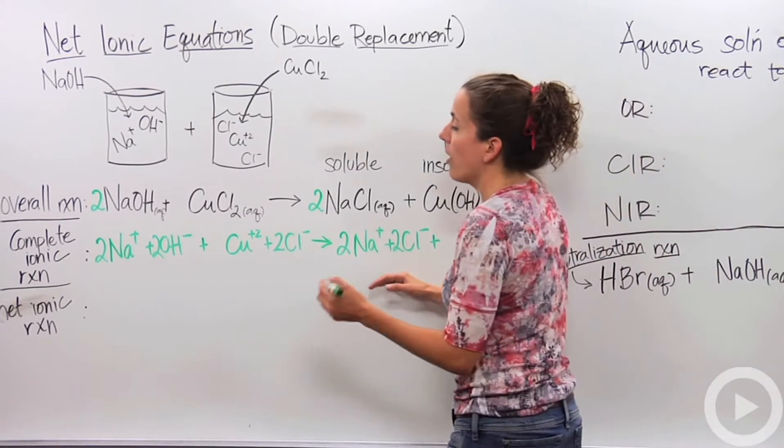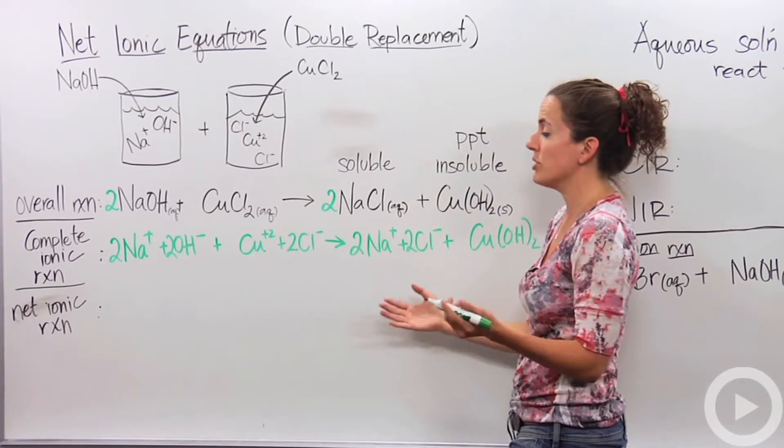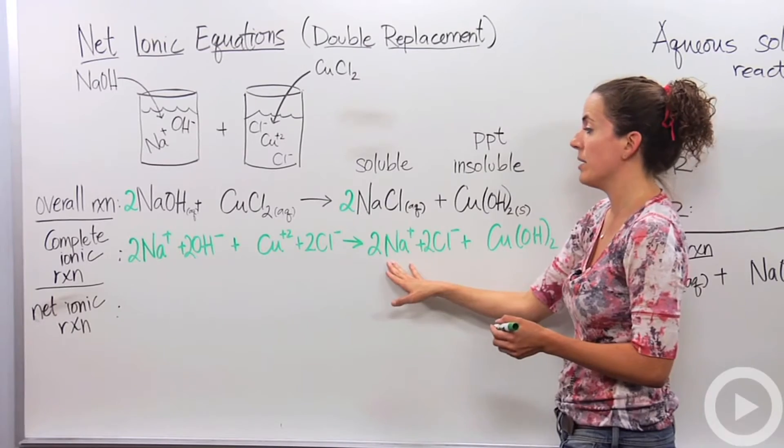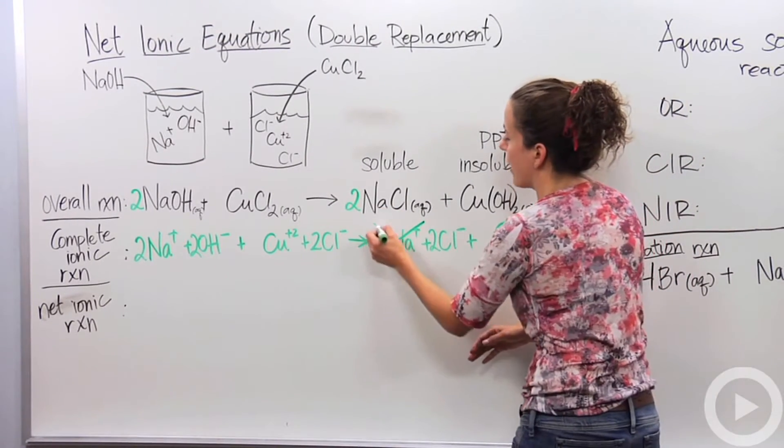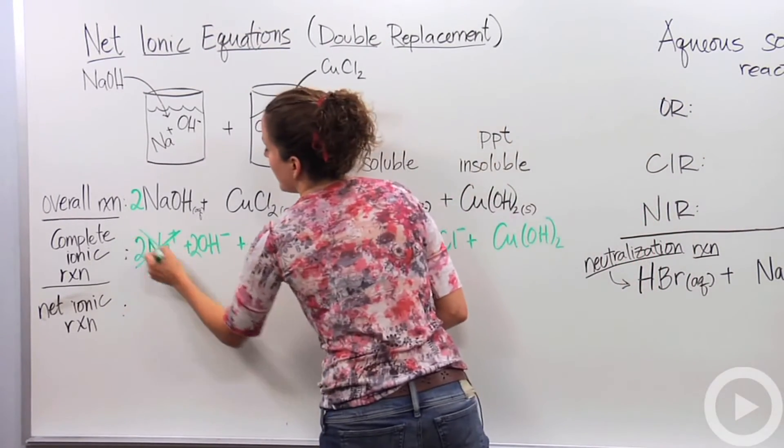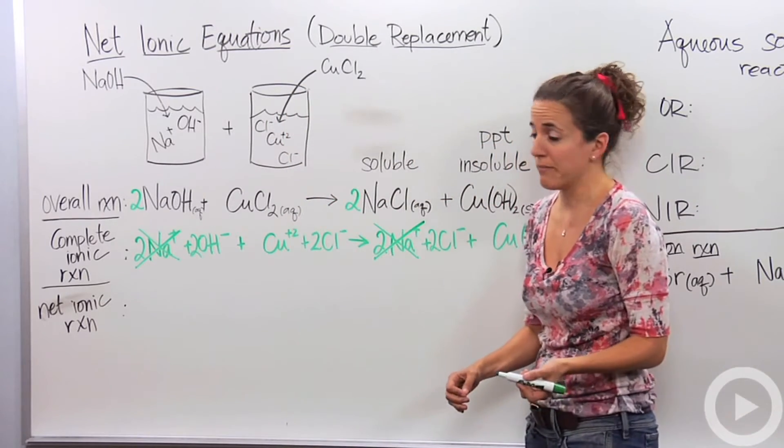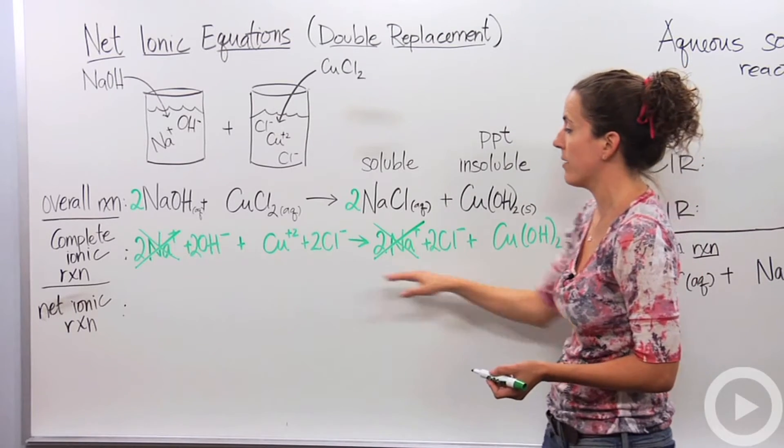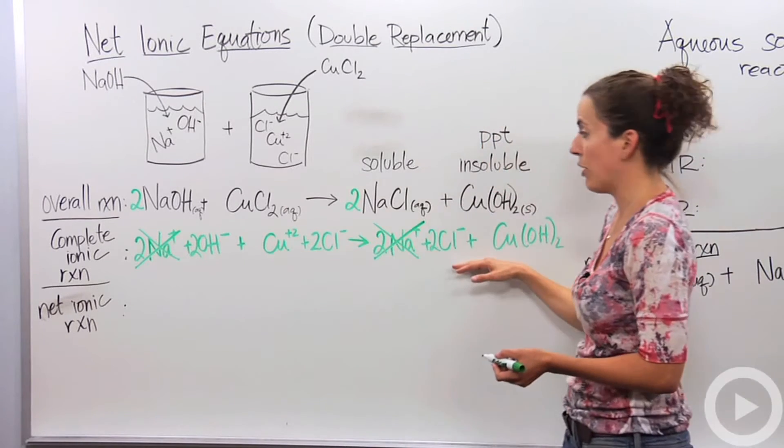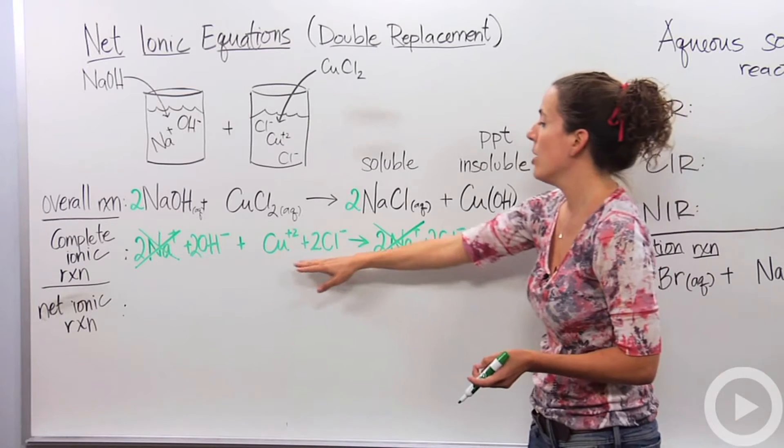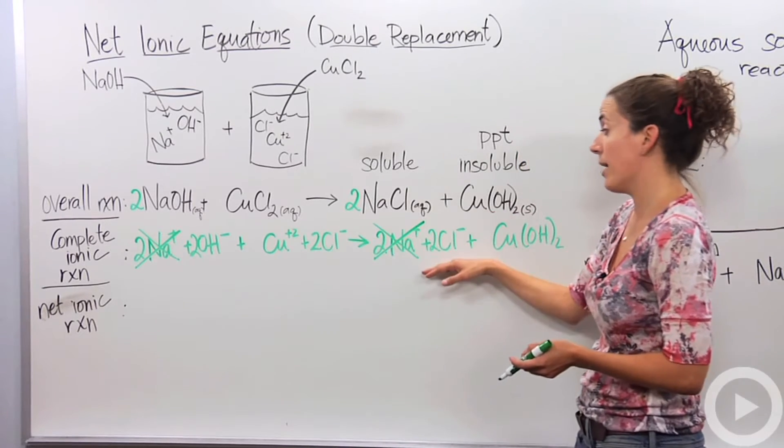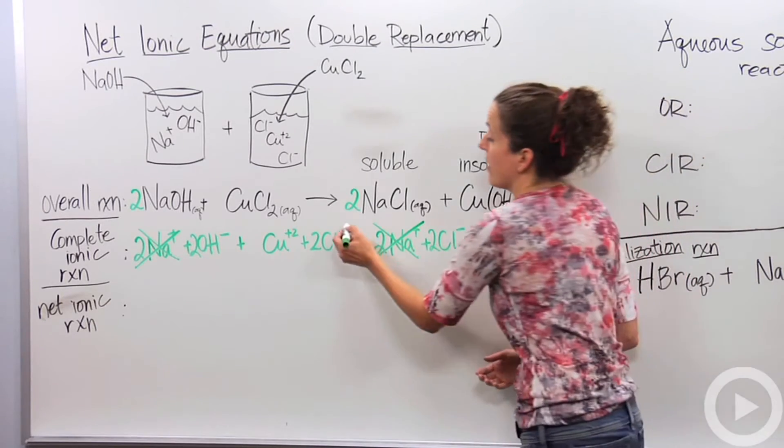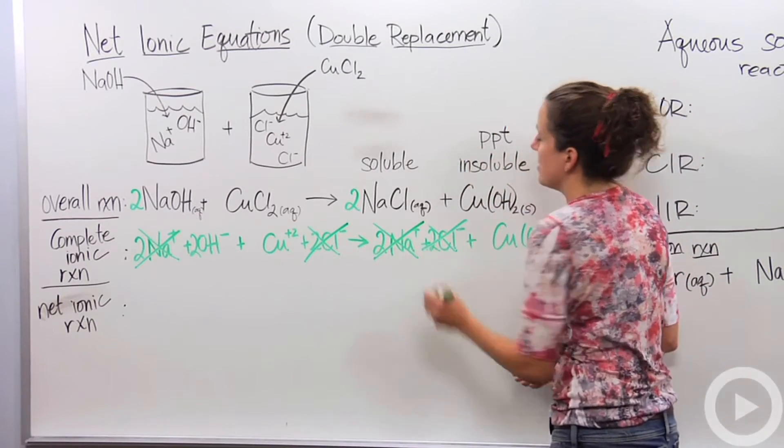What's a spectator ion? Well, there are ions on both sides of the reaction that haven't changed. For example, we have a sodium ion here and a sodium ion here. That's a spectator. We can actually cross that guy out. He is not doing anything in this reaction. We have hydroxide ion - we don't have one over here, so that's not a spectator. We have copper over here, we don't have copper over here, so that's not a spectator. We have two chloride ions, and yet we have two chloride ions here. He's a spectator.